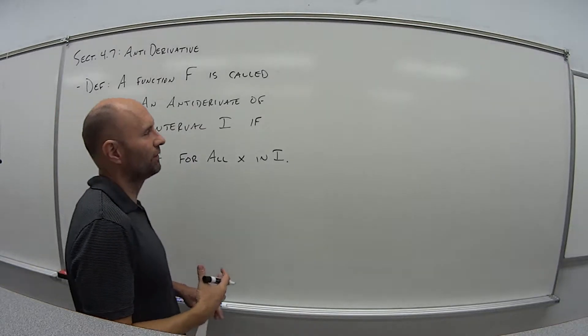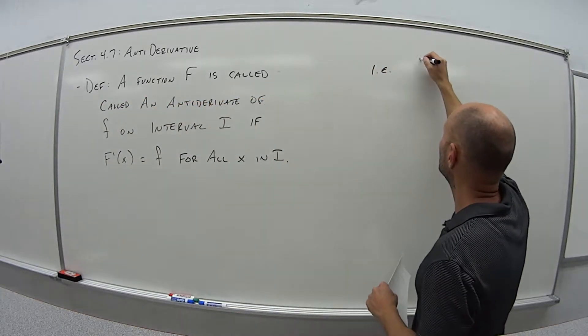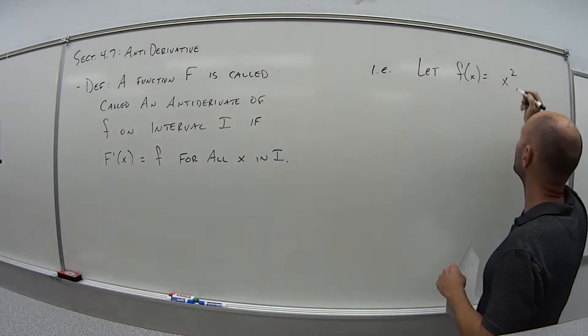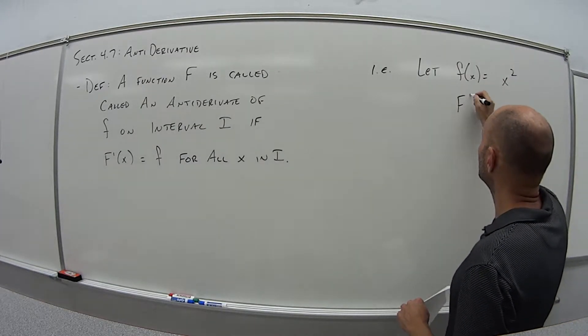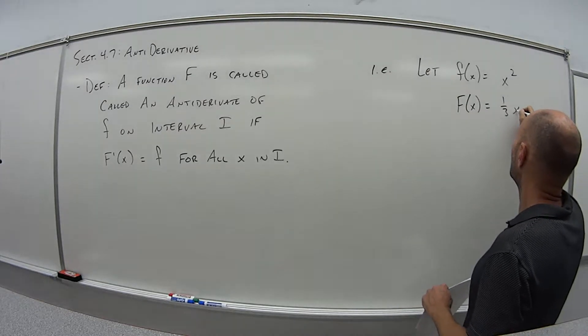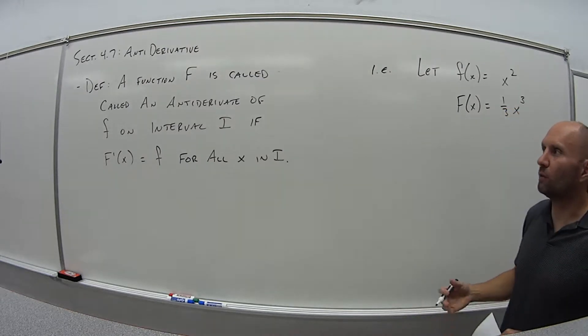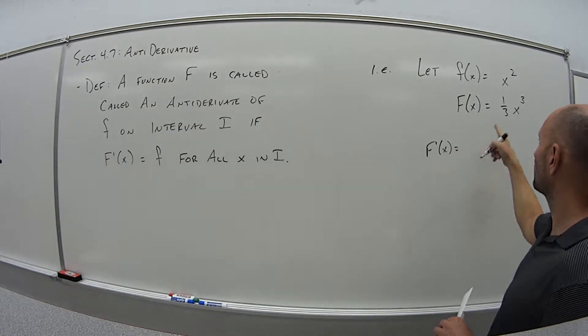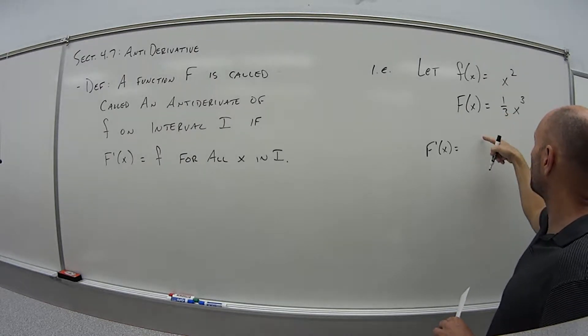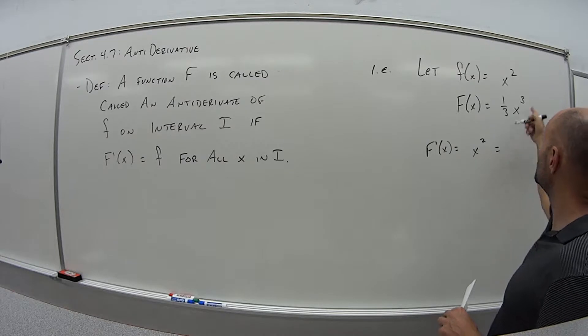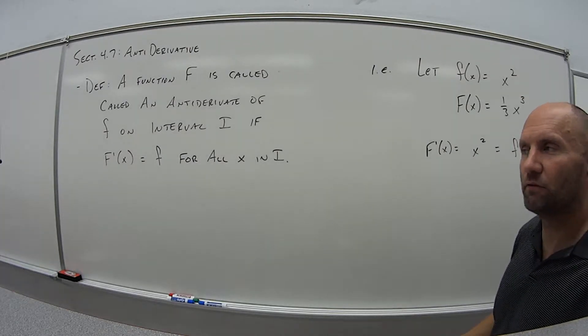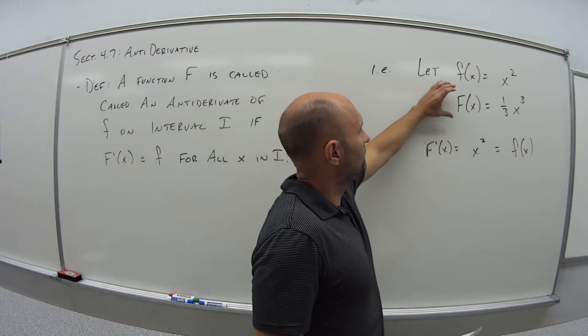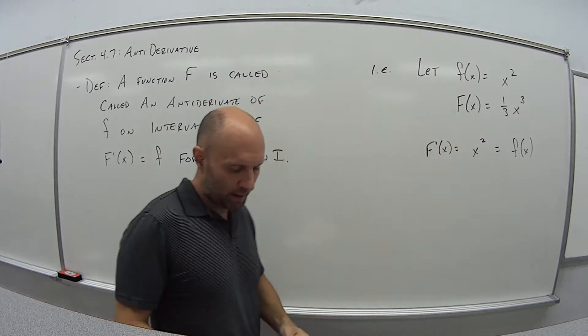So what is this thing really saying? Let's say we let f of x equal x squared. In that case, big F of x would have to be one-third x to the third. And why is that? Well, because by the definition, if I take the derivative of this guy, so F prime of x is bring down the 3 and multiply it, that's x to the 3 subtract 1 squared, which is our starting function f. So this anti-derivative function is going to be the one that if I take the derivative of it, gives us the main function back.